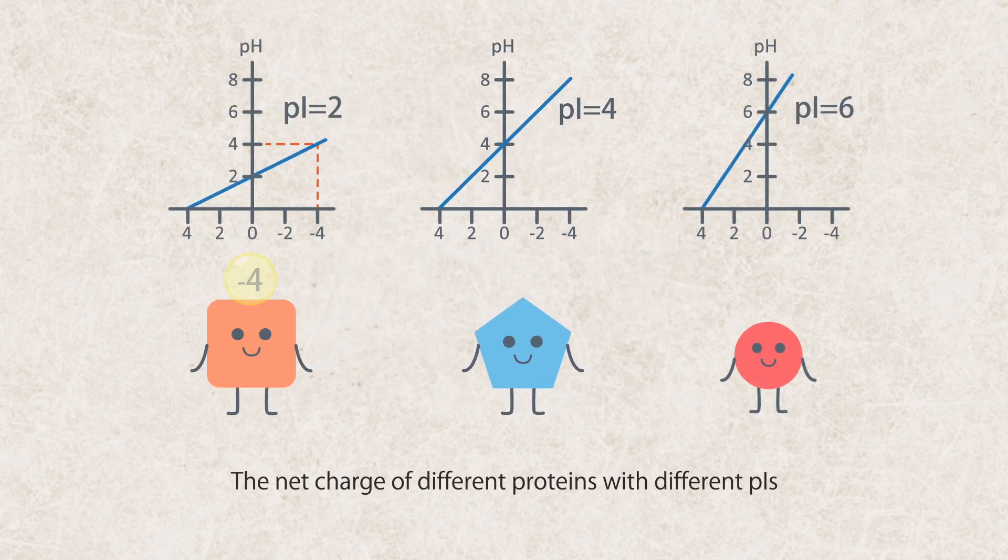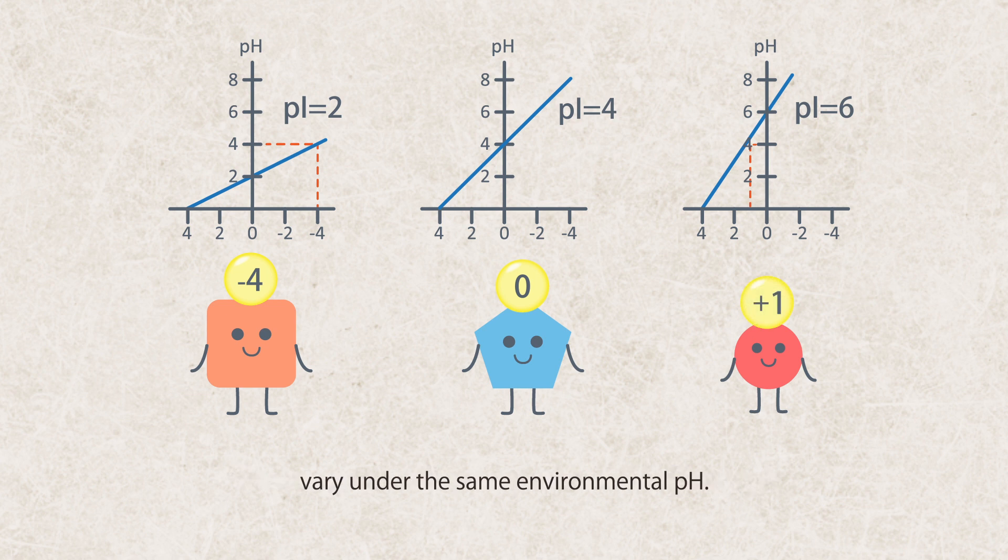The net charge of different proteins with different PIs vary under the same environmental pH. In this example, where the pH is 4, one protein carries net negative charge of 4, one is zero net charge, and one carries net positive charge of 1 due to their different PIs.